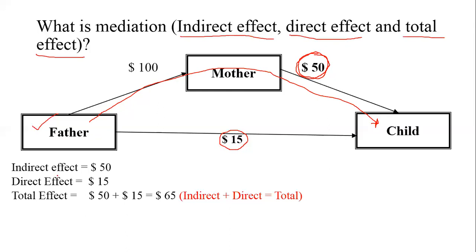As you can see, the indirect effect is $50 because it is going indirectly to the child. The total pocket money the child receives is $65 — 50 rupees given by the mother and 15 rupees given directly by the father. So the total effect equals the indirect effect plus the direct effect: 50 plus 15 equals 65. These concepts will be very important when analyzing a mediation model in Andrew Hayes' PROCESS macro.